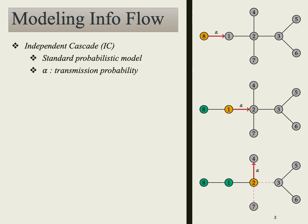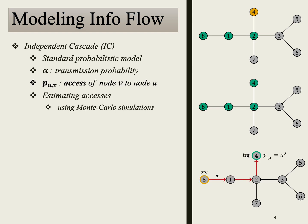In our specific case, nodes 3 and 7 do not receive the information, but node 4 becomes the only recipient. Node 4 doesn't have any neighbors to continue passing the information to, so the transmission stops at this point. In the end, each node has a certain probability of receiving information from the source, denoted as p(u, v) — the probability of node v receiving information from node u. In the given example, the probability of node 4 receiving information from node 8 is alpha cubed.